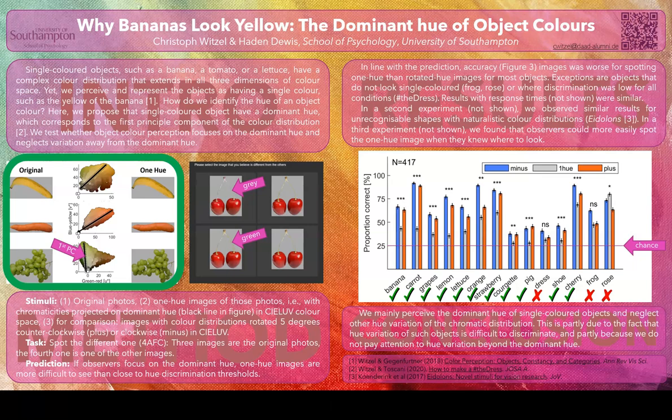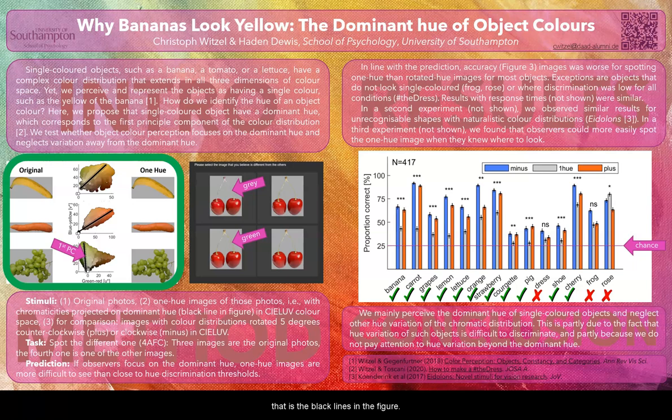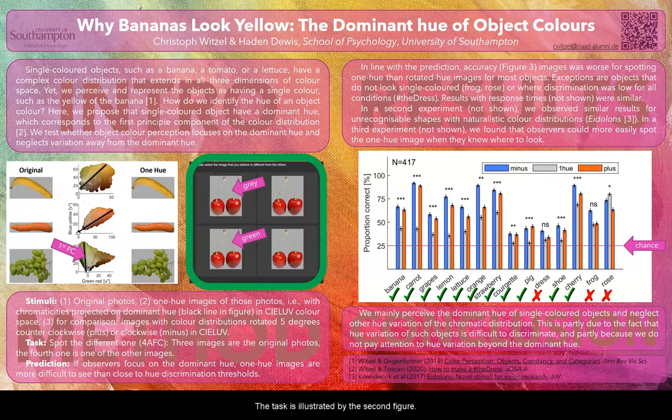In this study we wanted to show that human observers neglect the color variation away from the dominant hue. For this purpose we created one-hue images in which colors only varied along the dominant hue, that is the black lines in the figure. Then we tested whether observers are able to discriminate the one-hue version from the original photos with the full color distribution. The task is illustrated by the second figure.